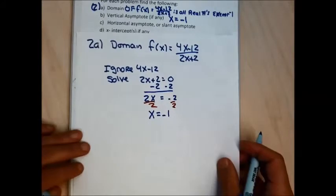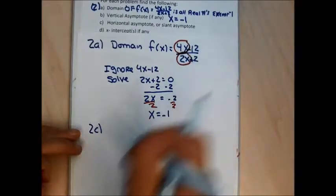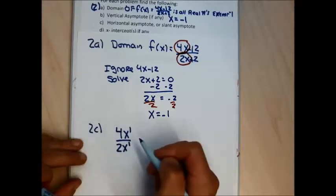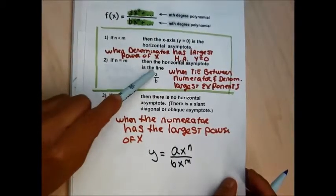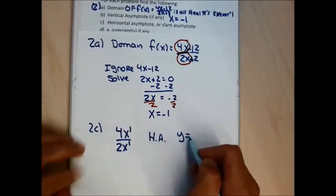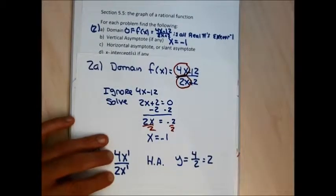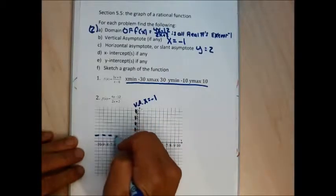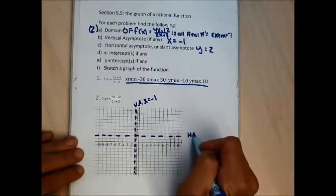For part C, the horizontal asymptote — I look at the highest x power term in the numerator and the highest x power term in the denominator. The highest x power term in the numerator is 4x to the first; the highest in the denominator is 2x to the first. When the highest exponent in the numerator equals the highest exponent in the denominator, you divide the coefficients to get the horizontal asymptote. So the horizontal asymptote is y equals 4 over 2, which simplifies to y equal to 2. I'm going to show that on my graph by drawing a dashed horizontal line through 2 on the y-axis.